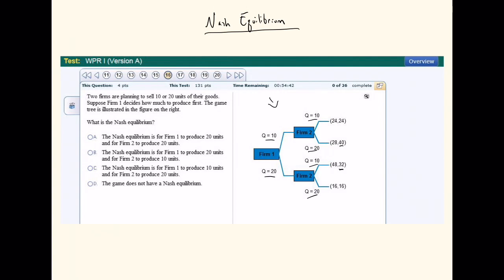And then this game includes payoffs for each group. So the first payoff in parentheses, these payoffs belong to firm one. And the second payoff, those belong to firm two.